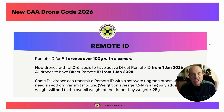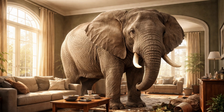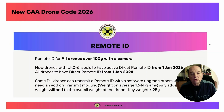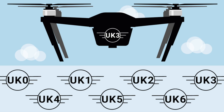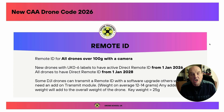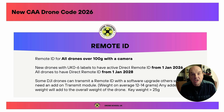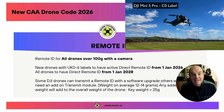Finally, the biggest change is remote ID — truly the elephant in the room. All drones over 100 grams with a camera will need some form of remote ID, some form of transmission from the drone. All new drones sold from January 1st 2026 onwards with a UK label (UK 0 through UK 6) will need to have remote ID already working on that drone. However, legacy drones — physical new drones that aren't new models, like a new Mini 5 Pro — won't need remote ID until January 1st 2028.